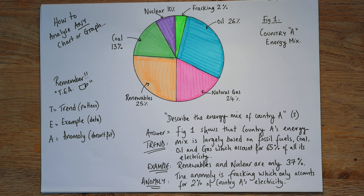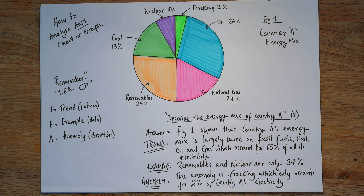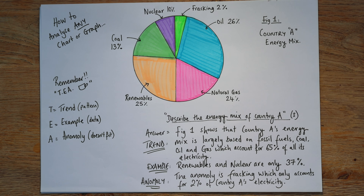Now we need our anomaly. Sometimes there just isn't one — it's not clear — but in this case I think we can talk about fracking. It's the smallest in the graph; it doesn't quite fit. So the anomaly is fracking, because it doesn't fit beautifully — it should be a bigger chunk if it wants to fit in with the rest. The anomaly is fracking, which only accounts for 2% of country A's electricity.